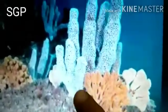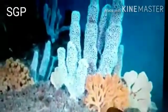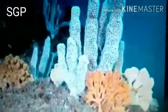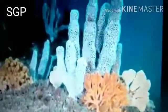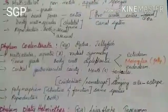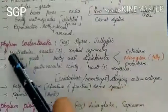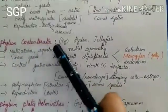Examples of Porifera are Euplectella and Sycon. This is the structure of Euplectella. The next phylum is Coelenterata.